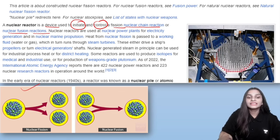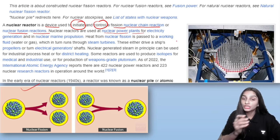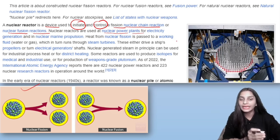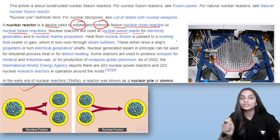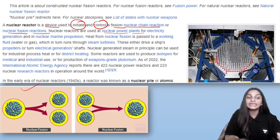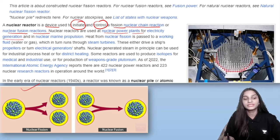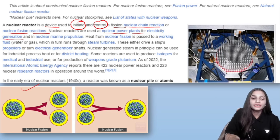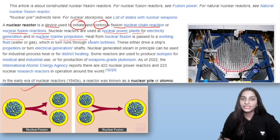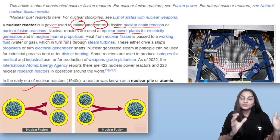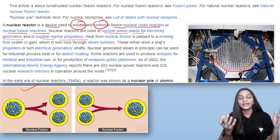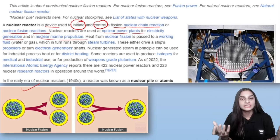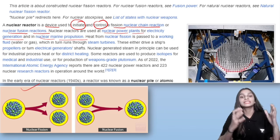Nuclear reactors are used at nuclear power plants for electricity generation purposes. They are also used in nuclear marine propulsion. So we now understand what a nuclear reactor is, what it is used for, and how it is used.